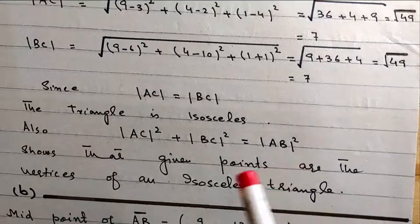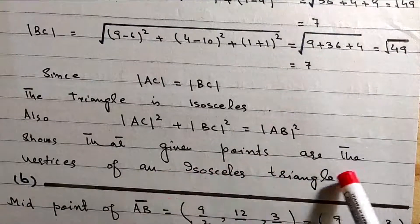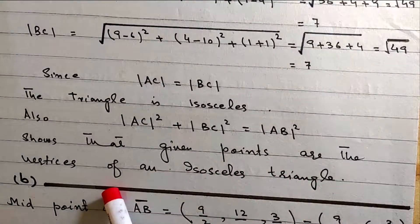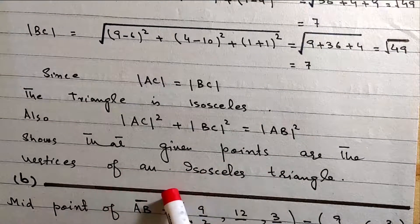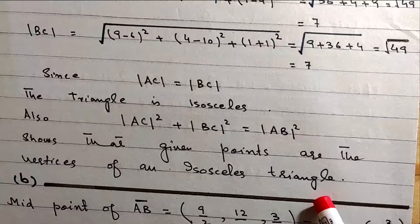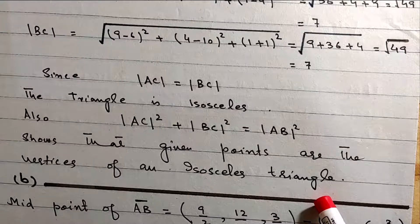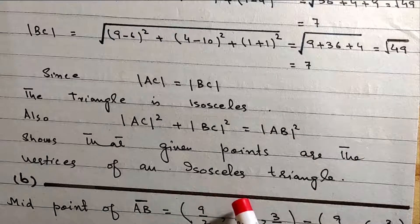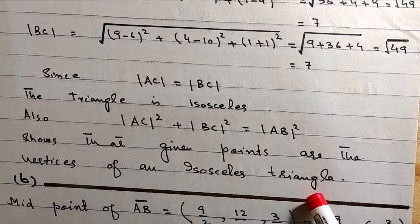So the given points are the vertices of an isosceles right triangle. The given points are the vertices of the right isosceles triangle.